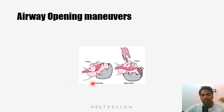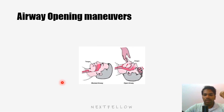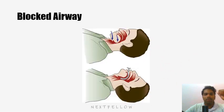To relieve the obstruction we have two things in hand: airway opening maneuvers and airway devices. Here is a blocked airway — the tongue is blocking the airway, the trachea and epiglottis are visible, and air cannot pass into the lungs. One airway opening maneuver is head tilt and chin lift.